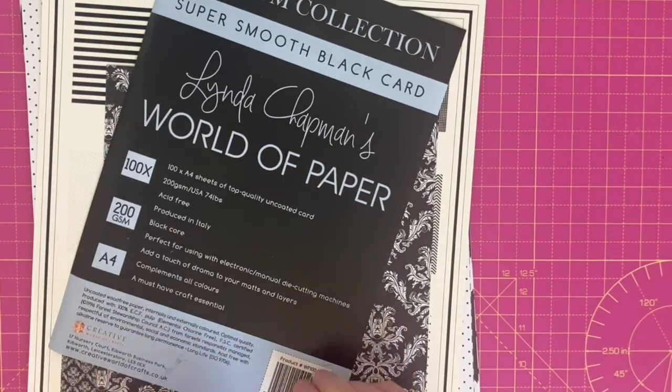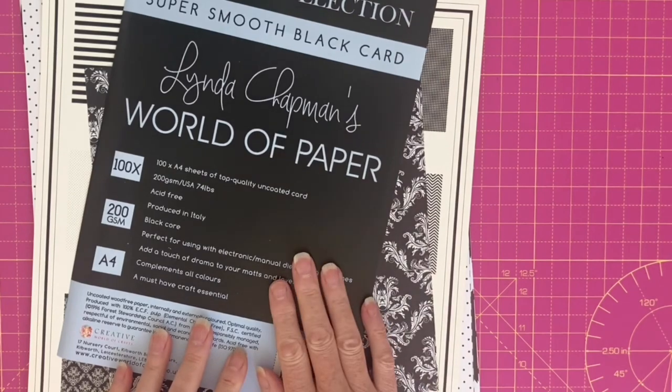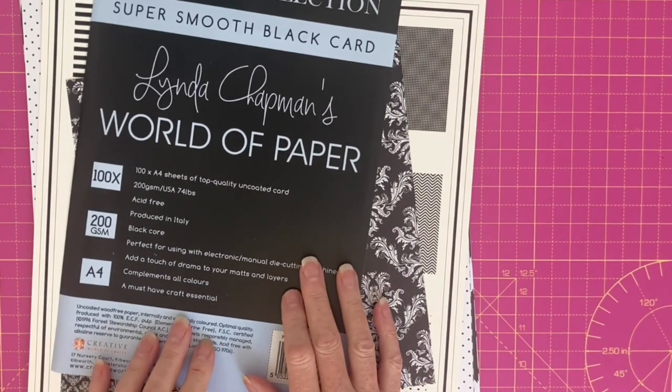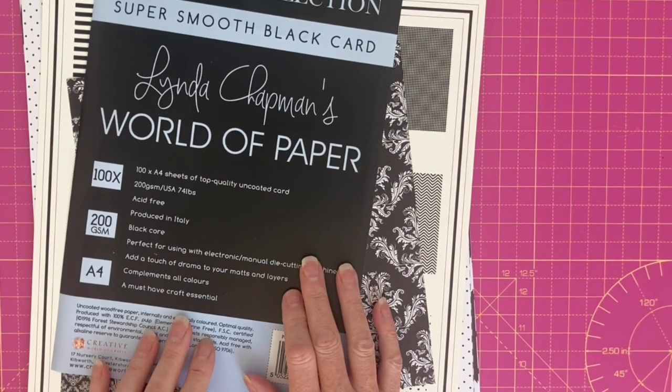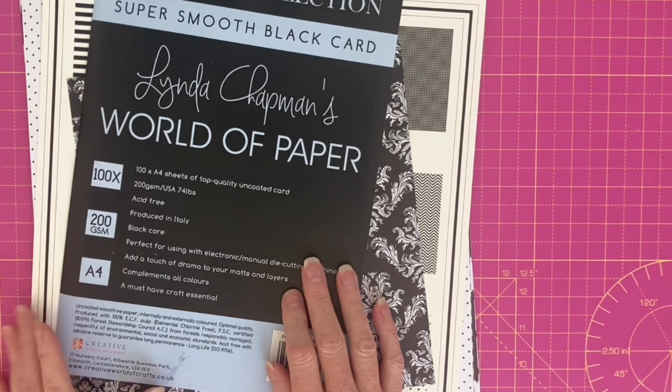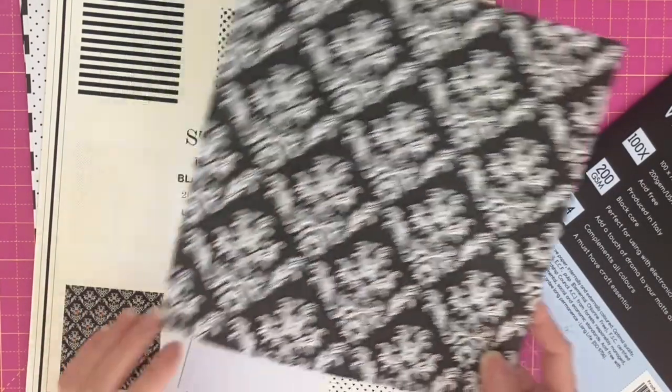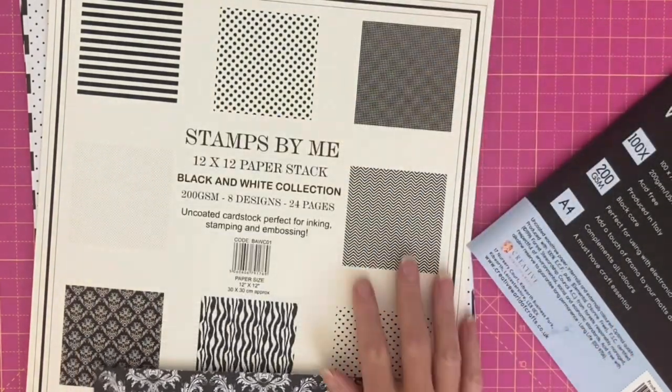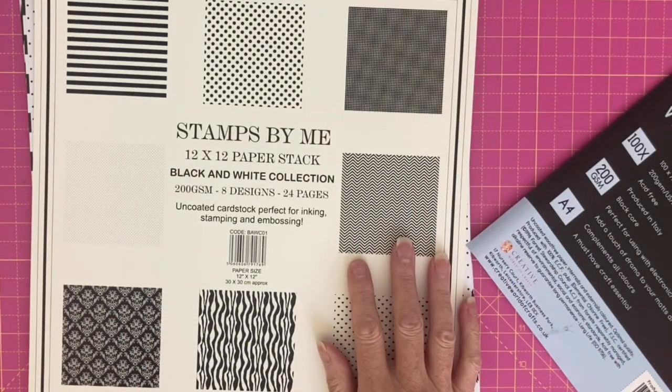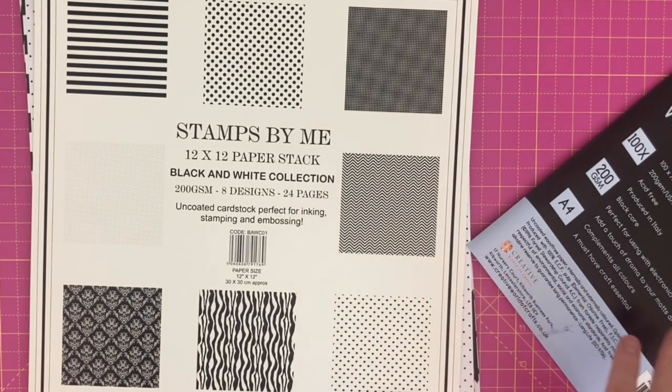Today I've chosen to use my super smooth black card from Linda Chapman's World of Paper. This is my designer paper from a Stamps by Me black and white collection. So let's put the project together.